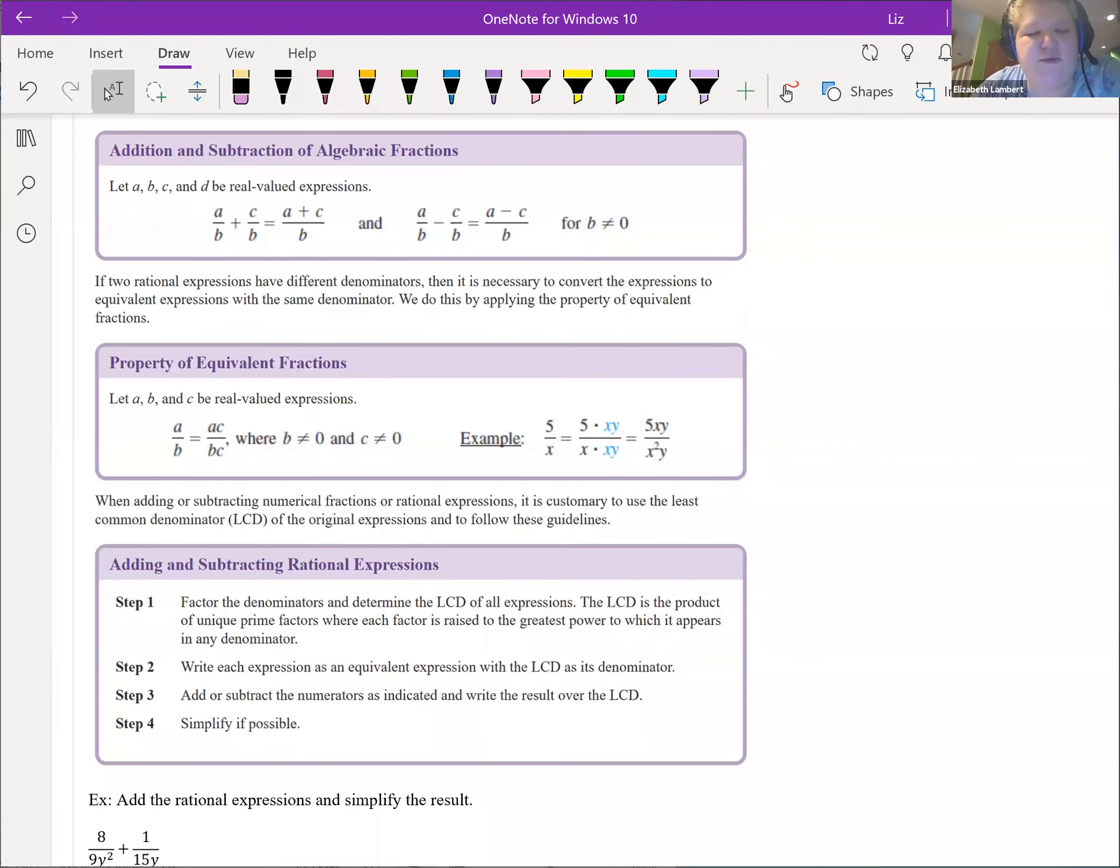Welcome back. We have the uglier parts of rational expressions, which is adding and subtracting them. Ironically, when you have an equation, you can multiply both sides by the common denominator and clear the fractions. When you don't have an equation, all you can do is get a common denominator.